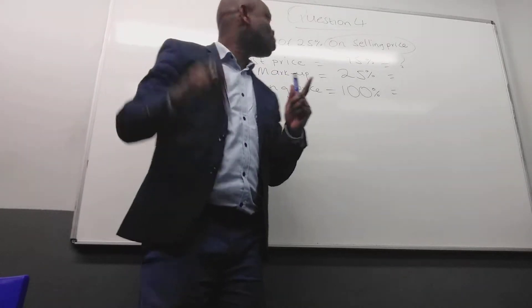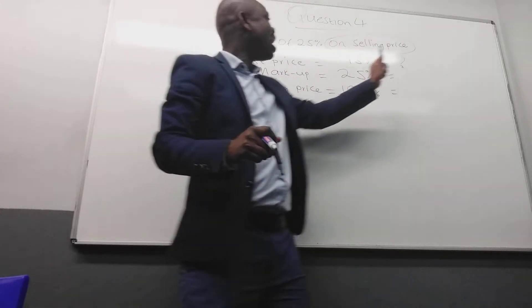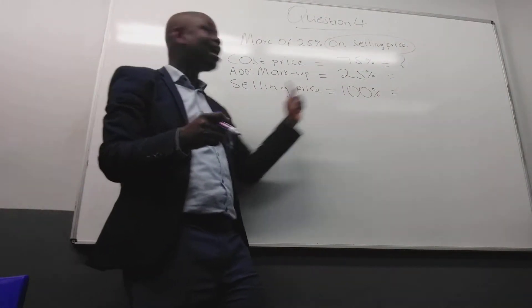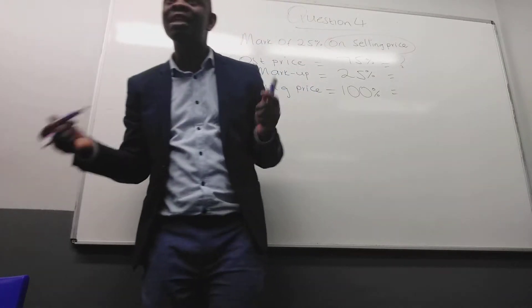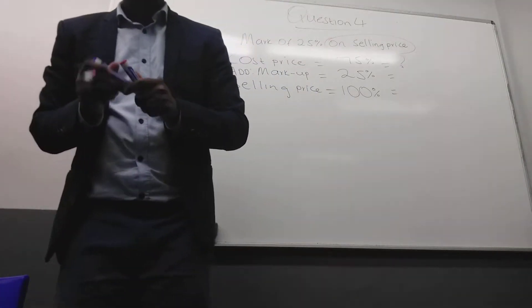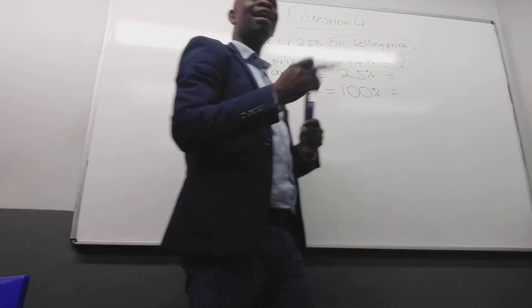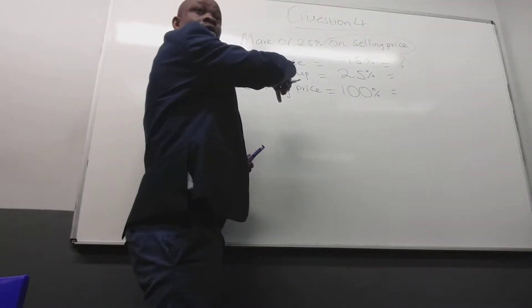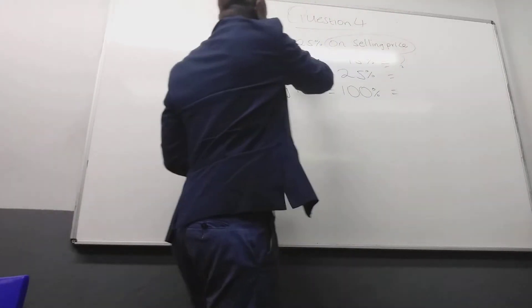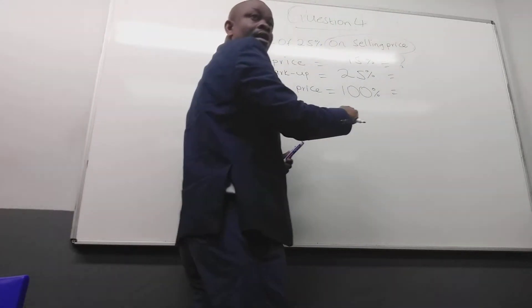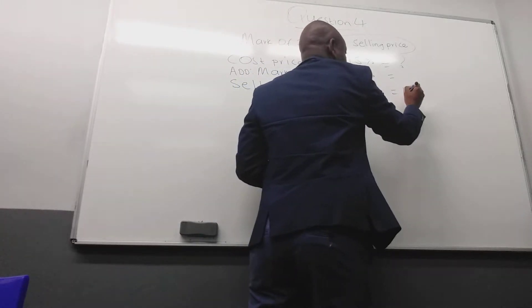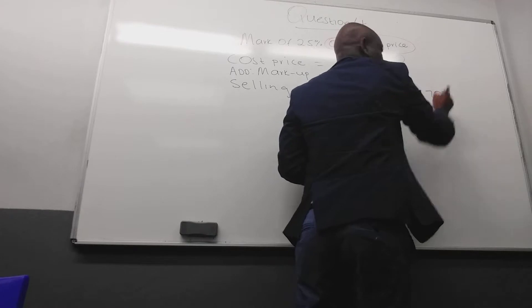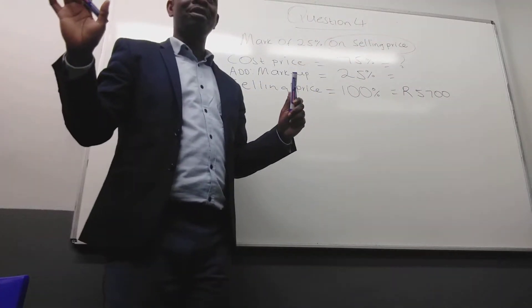If the question wanted me to calculate the markup, I would put the question mark here. If they asked me for selling price, I would put the question mark there. Can you see now? But remember, they cannot ask you to calculate a certain amount if they don't give you at least one of those amounts. So from the given information, which one is it given as an amount yet?